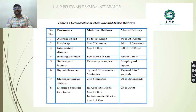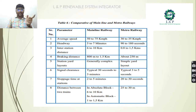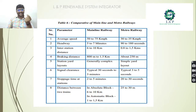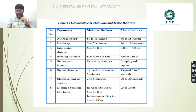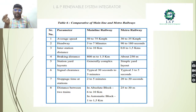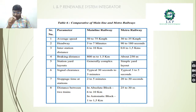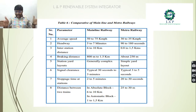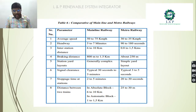Comparing mainline and metro railways: average speed is 50–75 km/h for mainline versus 30–35 km/h for metro. Headway is 5–7 minutes for mainline versus 90–180 seconds for metro. Interstation distance is 6–10 km for mainline versus 0.8–5 km for metro. Braking distance is 800 m–1.5 km for mainline versus 250 m for metro. Signal clearance is 30 seconds–3 minutes for mainline versus 3–5 seconds for metro. Stoppage time is 2–5 minutes for mainline versus 20–30 seconds for metro. Block distance is 6–10 km for mainline, about 1–1.5 km for automatic block, versus 25–30 meters for metro.